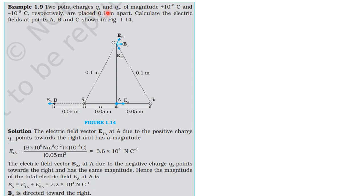Problem 2: Two point charges q1 and q2 of magnitude 10⁻⁸ C and −10⁻⁸ C respectively are placed 0.1 meter apart. Calculate the electric fields at points A, B, and C as shown in the figure. The charges are of equal magnitude 10⁻⁸ C and are separated by a distance of 0.1 meter.